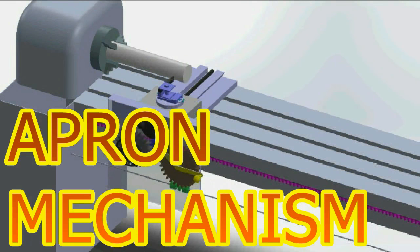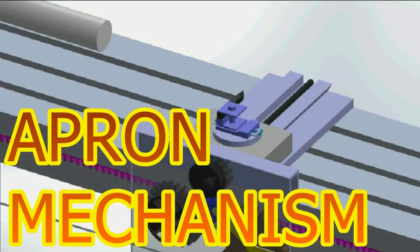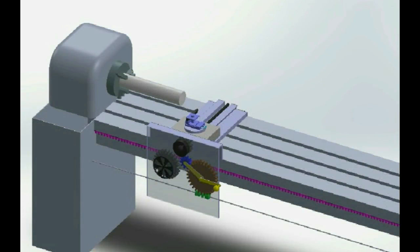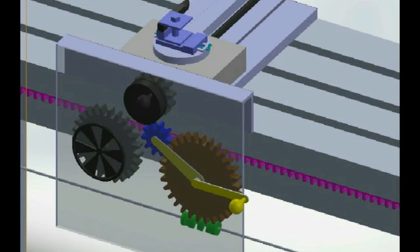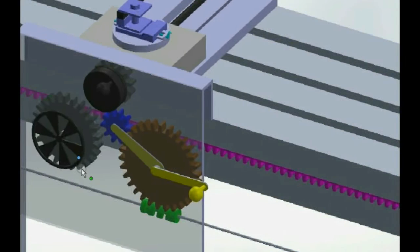In this video we'll talk about the apron mechanism and how automatic feed of the carriage in a lathe works. The apron mechanism is a mechanism in the carriage which is behind how the feed and cross feed of the tool occurs.